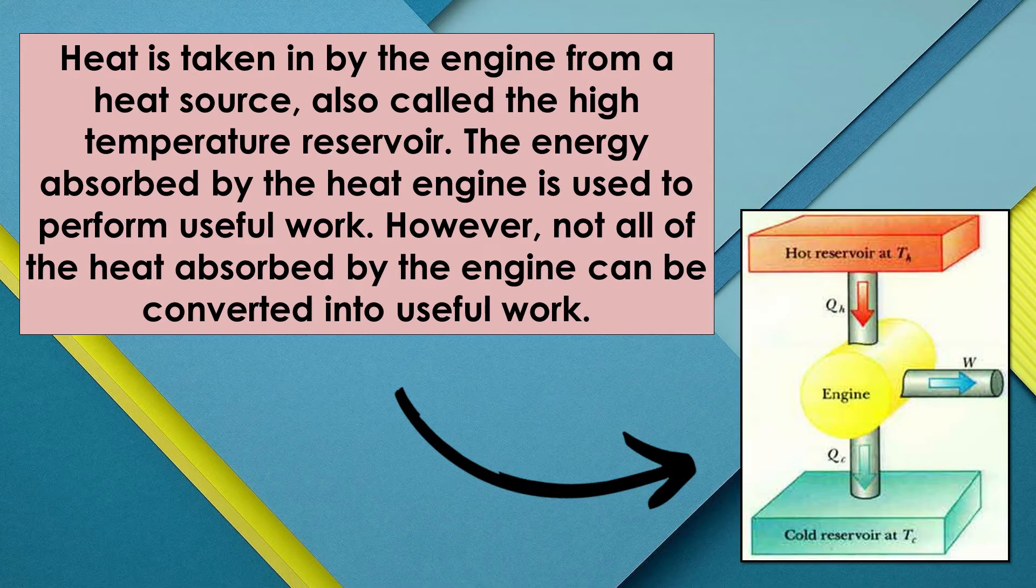not all the heat absorbed by the engine can be converted into useful work. There will always be a portion of heat that will be lost as a result of other interactions, like friction. This lost heat is called waste heat. The waste heat goes to the low temperature reservoir or the heat sink of the heat engine. The energy converted as useful mechanical work is equal to the difference in the heat input from the high temperature reservoir and the heat output that was received by the low temperature reservoir.